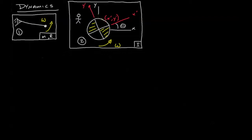Welcome back to our video module on dynamics. Today I've written down two scenarios that we've probably looked at before. The first one is some sort of point mass rotating around a pivot — there's no gravity, it's just rotating around there, and we'd like to understand what the momentum is at any given time. The second one is our merry-go-round: it's spinning with some angular velocity, and we'd like to know what its angular momentum is.